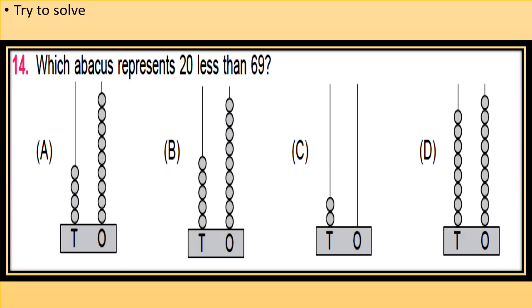The next question is: which abacus represents 20 less than 69? Look at the options A, B, C, and D. Now we have to calculate the digits at tens and ones place by counting the number of beads. Then we have to calculate 20 less than 69, that is 69 minus 20. So choose the correct option.